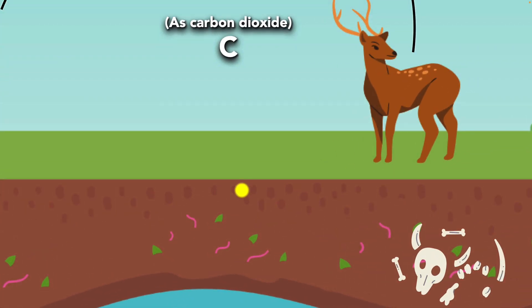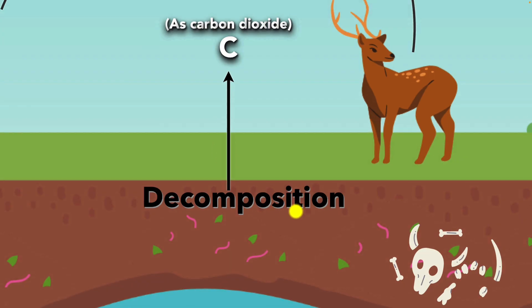But what happens when plants or animals die? That's where the decomposers come in. Organisms like bacteria and fungi break down dead organisms to get energy. This process is called decomposition, and it also releases carbon dioxide back into the atmosphere. So decomposition is a carbon source as well.